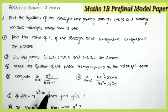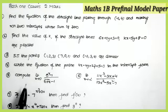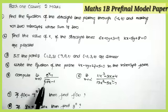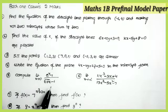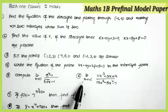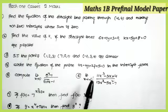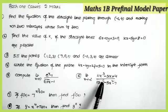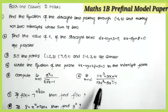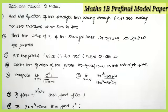The fifth question is from the topic Limits and Continuity: compute the limit as x tends to 0 of (e^x − 1) / (√(1 + x) − 1). The sixth question is also from Limits and Continuity: evaluate the limit as x tends to infinity of (11x³ − 3x + 4) / (13x³ − 5x² − 7).